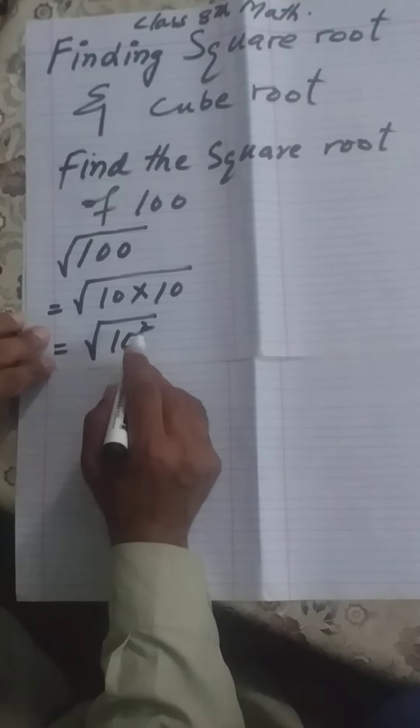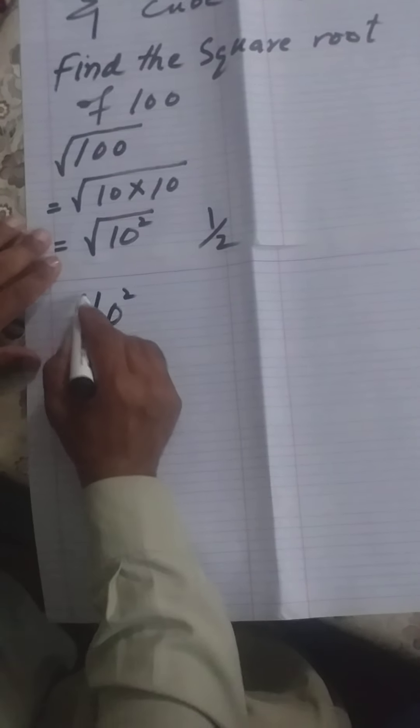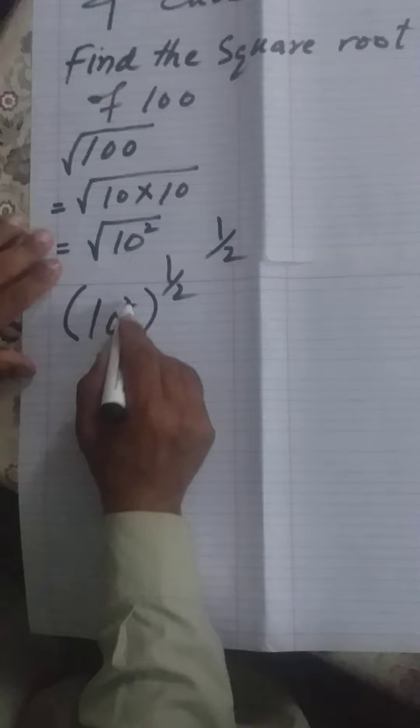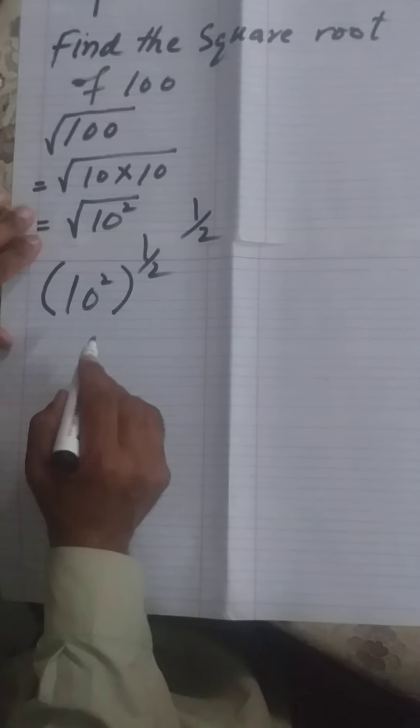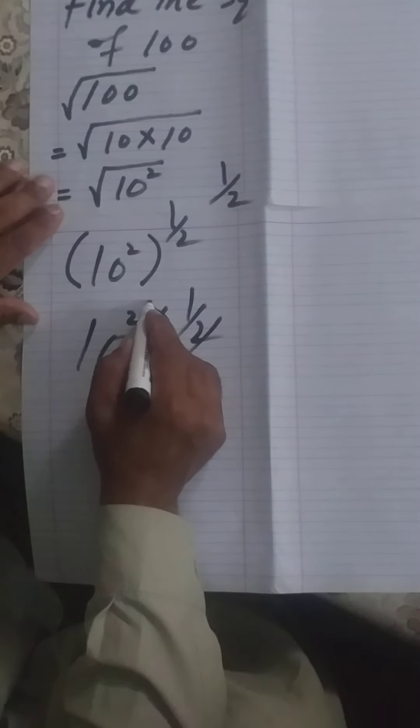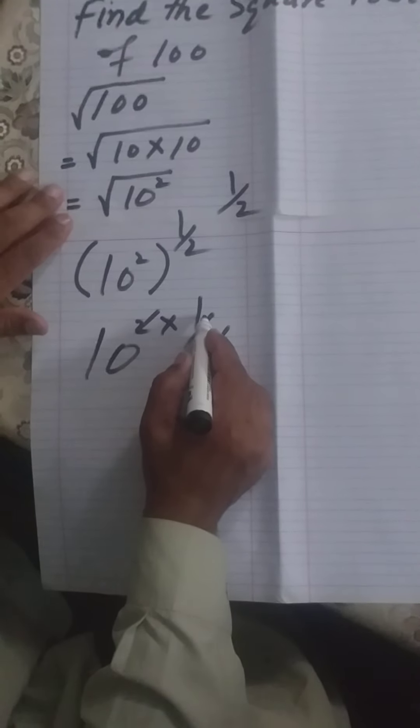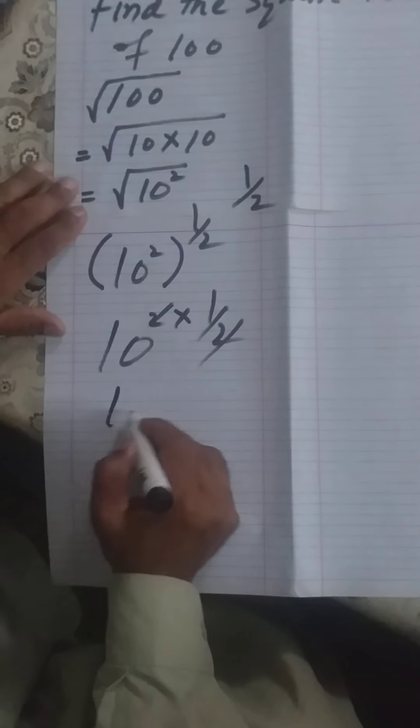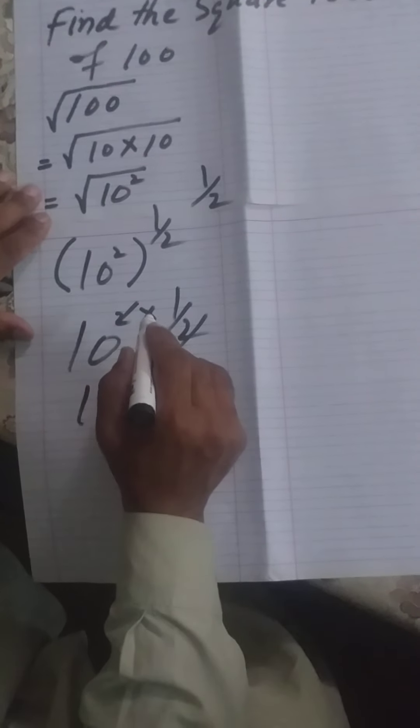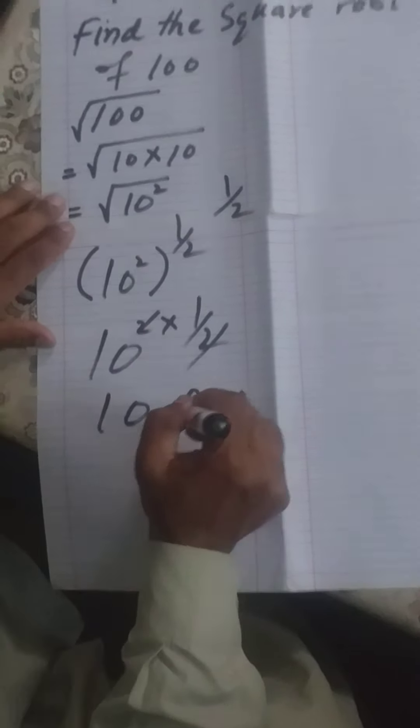We write this as 10 squared, into one by two. Now the power will multiply. 10 square into one over two. Two and two now cancel. The answer is 10. So 100 square root is 10.